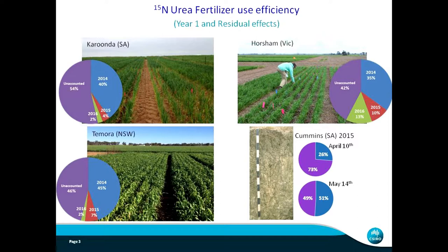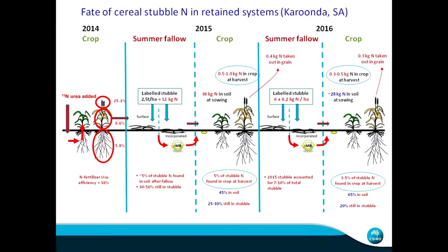Theresa Macbeth from the GRDC Leader group did a similar experiment at Cummins on a smaller scale - 30-centimeter cores - looking at how much of the urea N is taken up in the first crop. She used the same 15N and examined sowing time differences, April versus May sowing. Again, at least 50 percent was not taken up. So in all stubble-retained systems, only around 50 percent of fertilizer nitrogen is taken up by the crop. This is one factor to consider when estimating fertilizer requirements based on forecast rainfall and yield expectations.